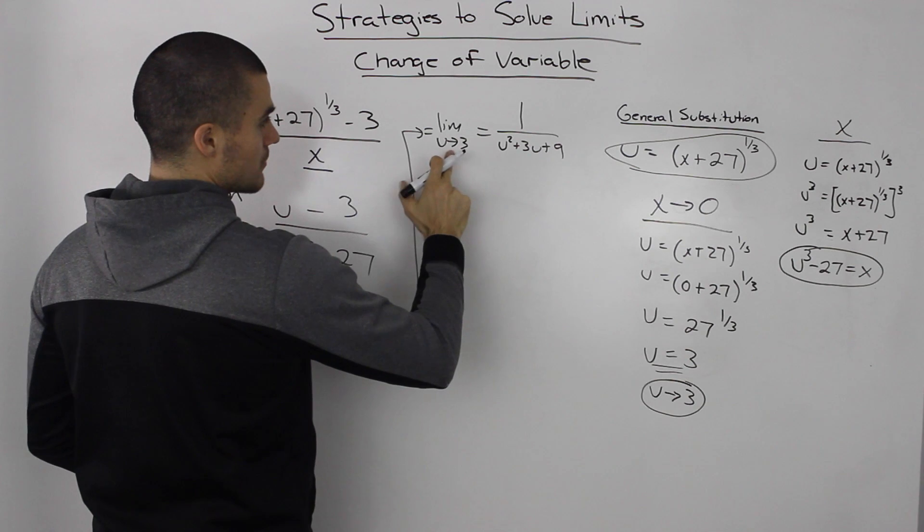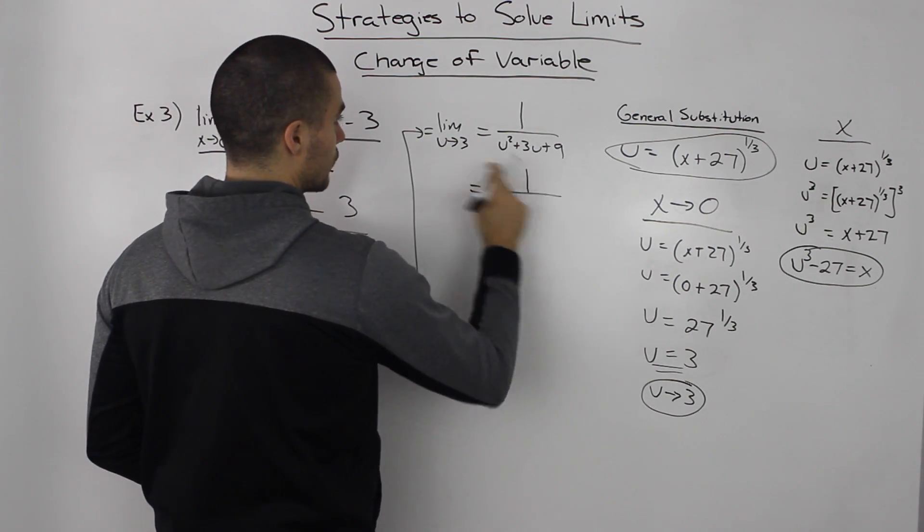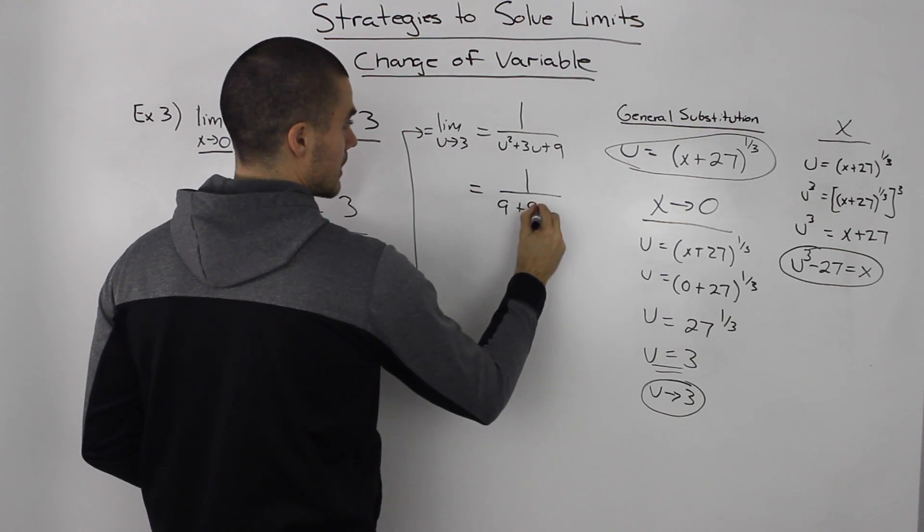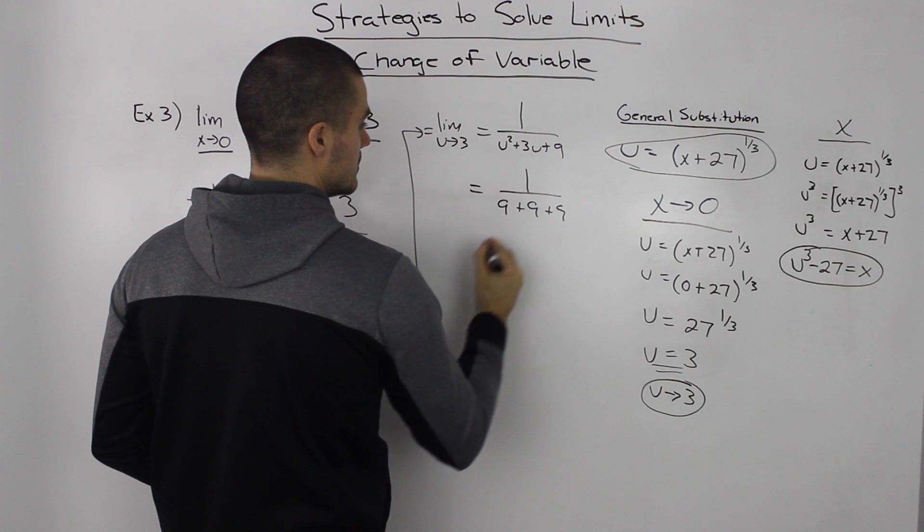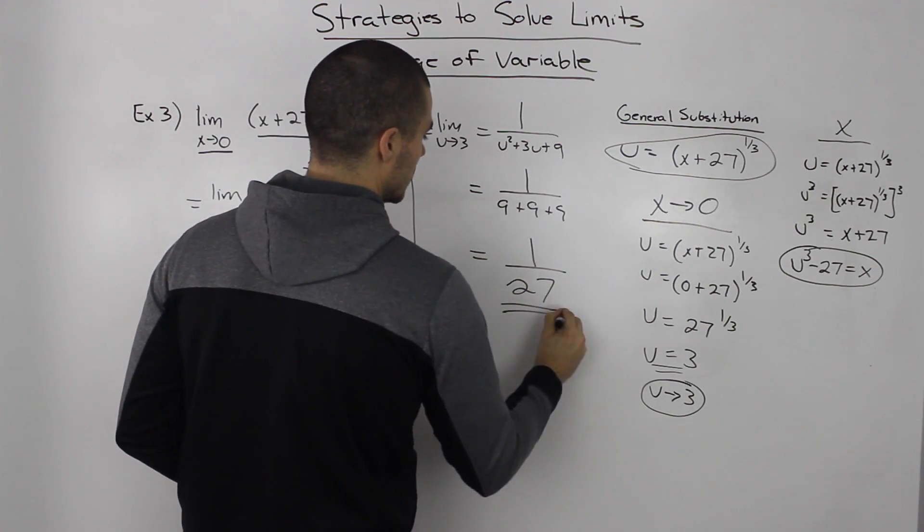Notice we can substitute 3 for u and the denominator won't be zero. We have 1 over (3^2 + 3·3 + 9), which is 1 over (9 + 9 + 9). Our final answer is 1/27.